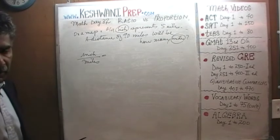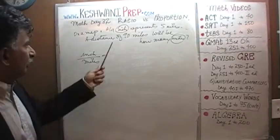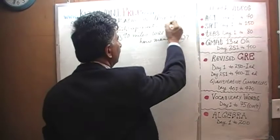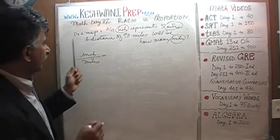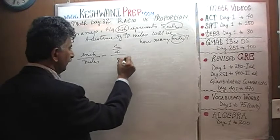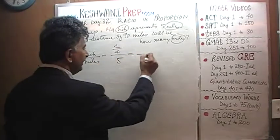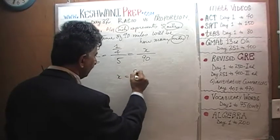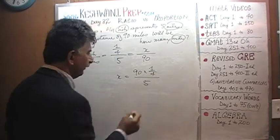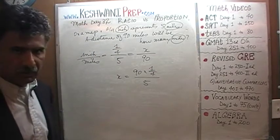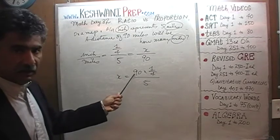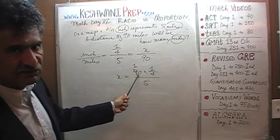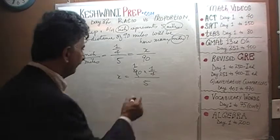If you did miles over inches it wouldn't make any difference — it would still be okay. But I have a habit of always putting down what I see first on the top and what comes later at the bottom. Inches appear first so I put them on top, then comes the miles. So on a map, one quarter inch represents five miles. The question is: a distance of ninety miles will be how many inches? X is going to be ninety times one quarter divided by five. Let's first divide ninety by five. Nine has one five. The remaining four joins the zero and becomes forty. Forty has eight fives.